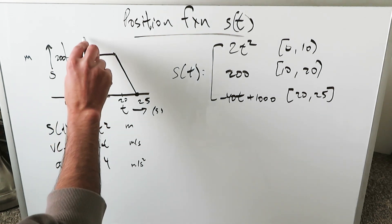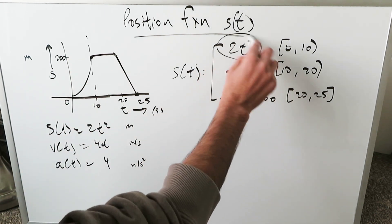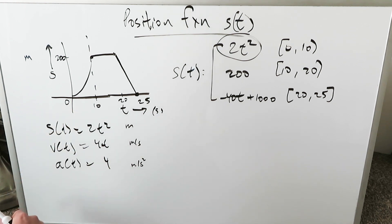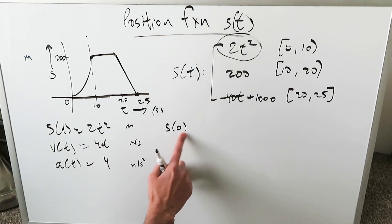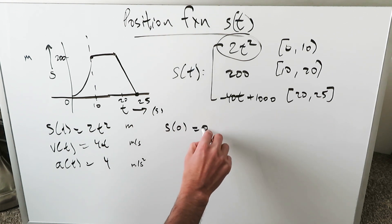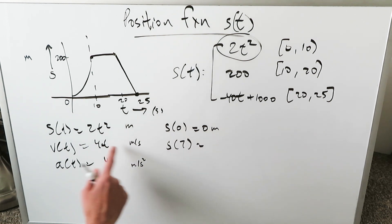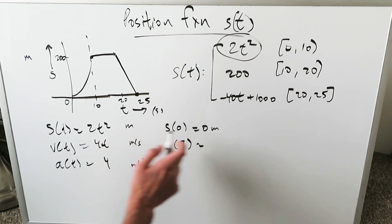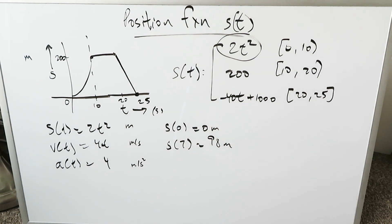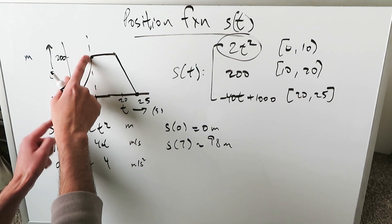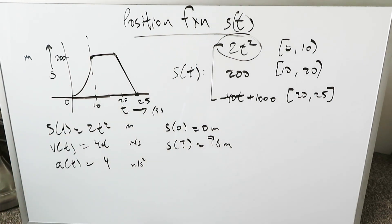We're examining this first part from 0 to 10 seconds. Based on these functions, you can determine the position of the object at any time in that interval. At time 0 seconds, you put it in and your object has not moved — it's at rest position. At time 7 seconds, you get 2 times 49, which is 98 meters. As time increases from 0 to 10 seconds, your object moves in a parabolic manner away from its resting position. That's the key analysis for the position aspect.